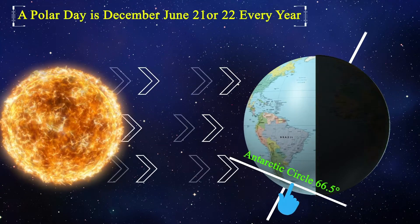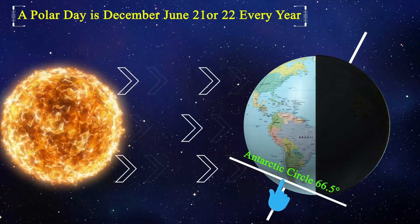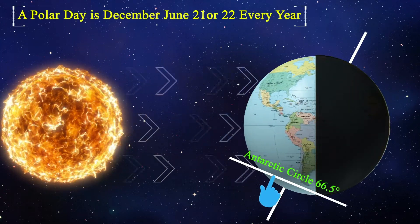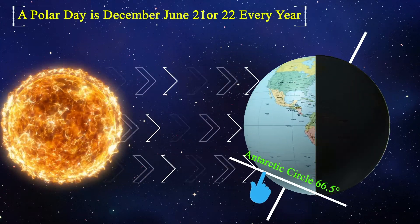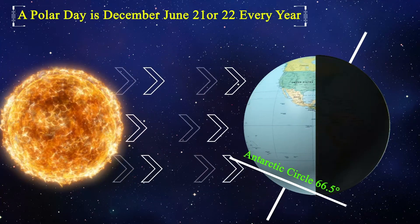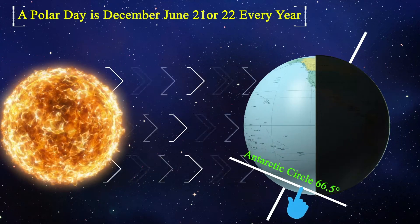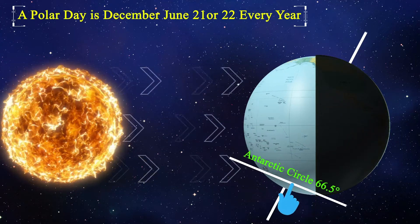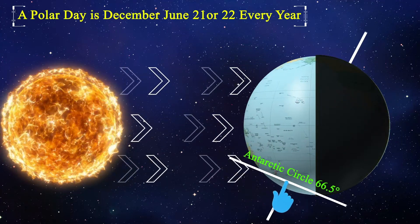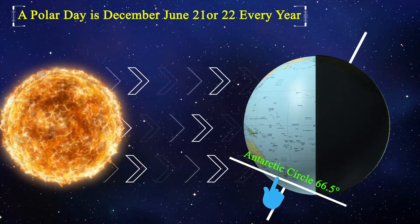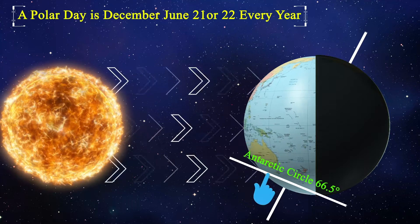A polar day is 24 hours of continuous daylight. It occurs on December 21st or 22nd every year, and is also called the midnight sun.